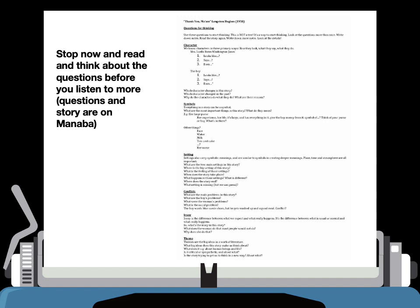Character connects to theme, symbols connect to theme, setting connects to theme, conflicts connect to theme, and irony connects to theme. Everything is really connected in a short story, and especially in a great short story like this one.